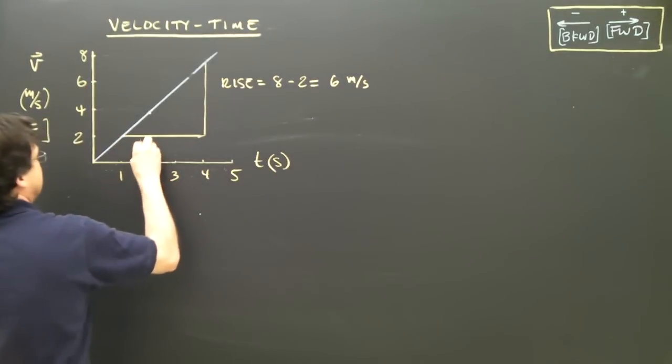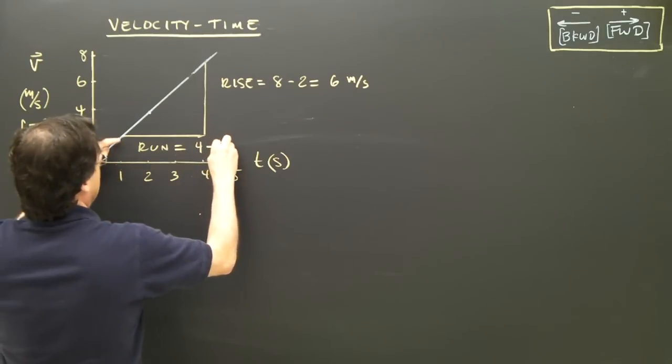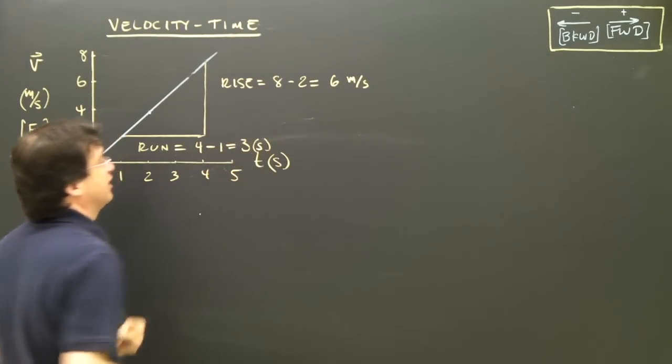Let's look at the run. The run here is going to be 4 minus 1, which is 3, and the units are seconds.